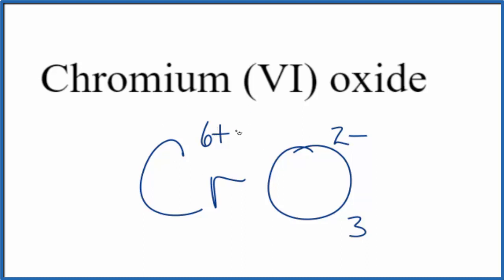So this is the formula for chromium (VI) oxide: CrO3. It's also often called chromium trioxide because we have three oxygens here. This is Dr. B.